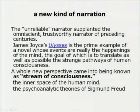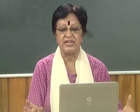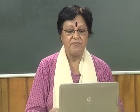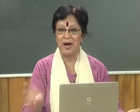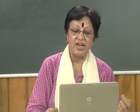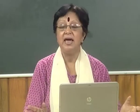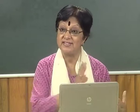This was a new kind of narration, just as there was a new kind of writing poetry during the Imagist period. The unreliable narrator supplemented the omniscient trustworthy narrator of preceding centuries. James Joyce's Ulysses is the prime example of a novel whose events are really the happenings of the mind — the goal is to translate as well as possible the strange pathways of human consciousness. A whole new perspective came into being known as the stream of consciousness — the inner space of the human mind — drawing on the psychoanalytic theory of Sigmund Freud.